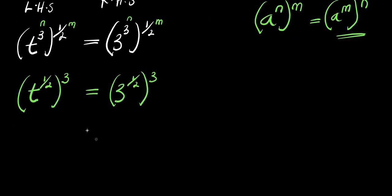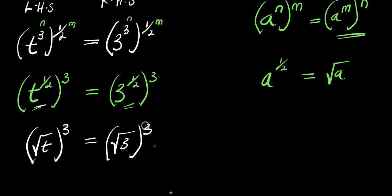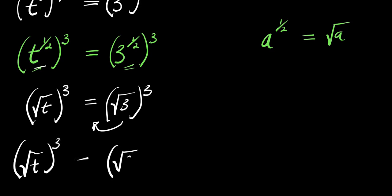From here I'm going to convert this back to radical form. Remember, if I have a to the power of 1 over 2, this is just like writing square root of a. Doing the same thing, I have square root of t to the power of 3, and this equals square root of 3 to the power of 3. The next thing is to move the right side over so we can expand. So I have square root of t to the power of 3 minus square root of 3 to the power of 3 equals 0.